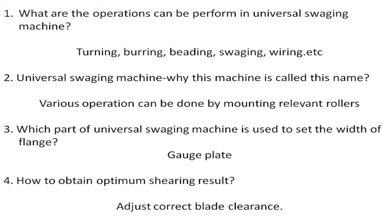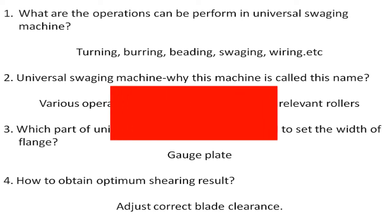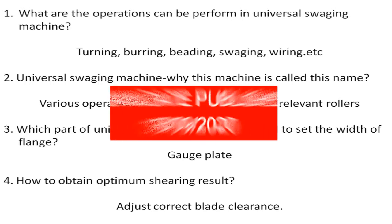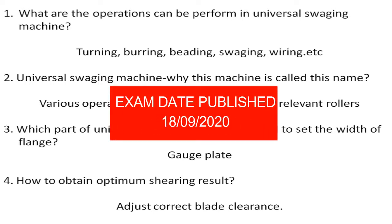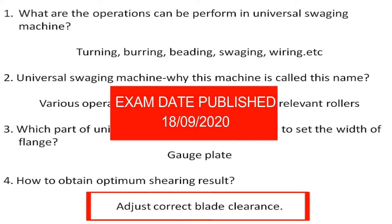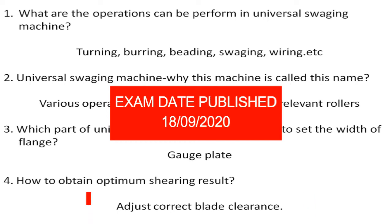How do we obtain an optimum shearing result? To obtain the optimum shearing result, we adjust the correct blade clearance. Adjusting the correct blade clearance is the key step.